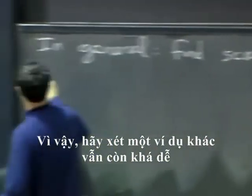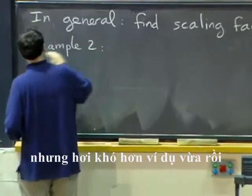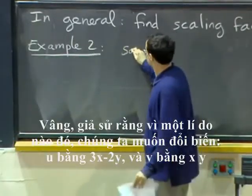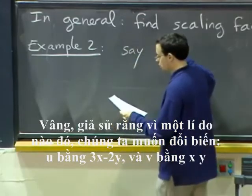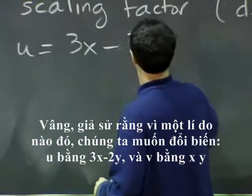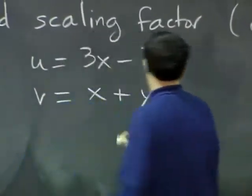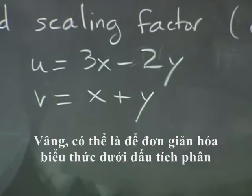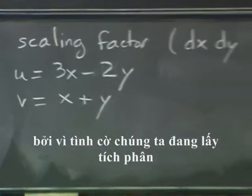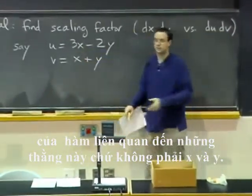So let's do another example that is still pretty easy but a little bit less easy. OK, so let's say that for some reason we want to set, we want to do the change of variables, u = 3x - 2y and v = x + y.